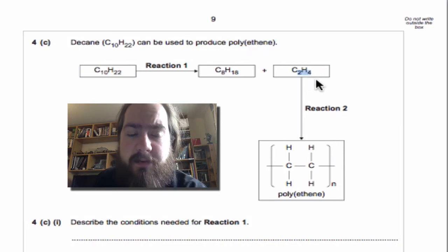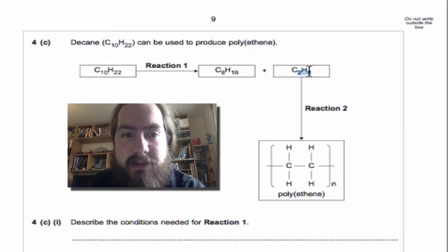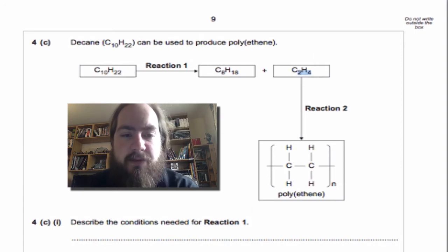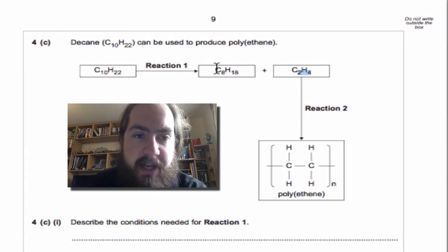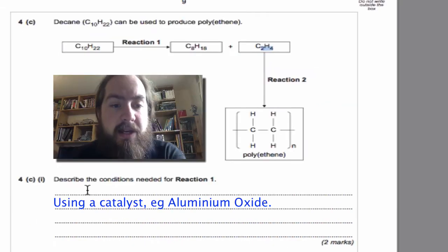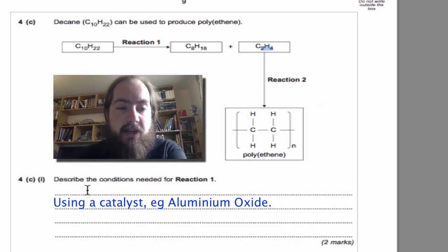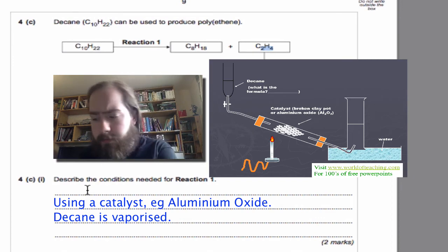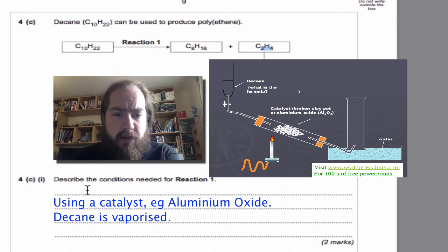And the reason that's ethene is because it's got a double bond there. Describe the conditions needed for reaction one. In order to get from decane to octane, this reaction is called cracking, and for cracking we're going to need a catalyst and it will only work if the decane itself is vaporized—that means it's a gas. That will get those two marks.